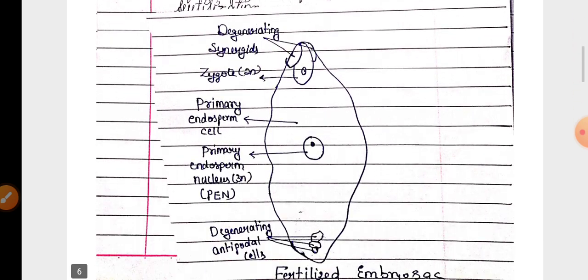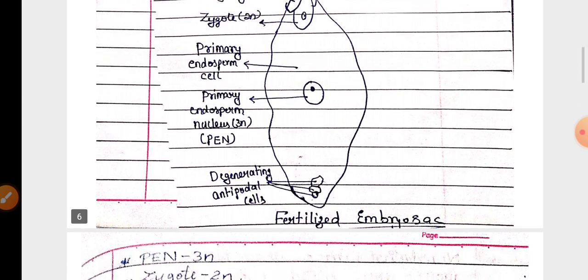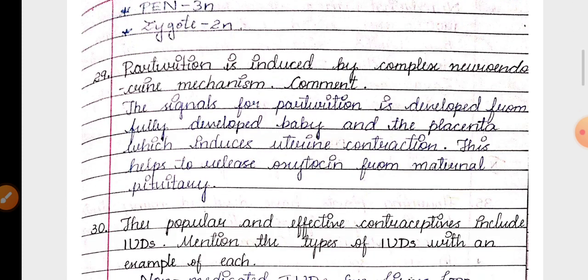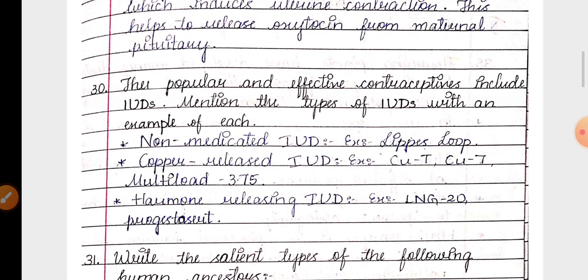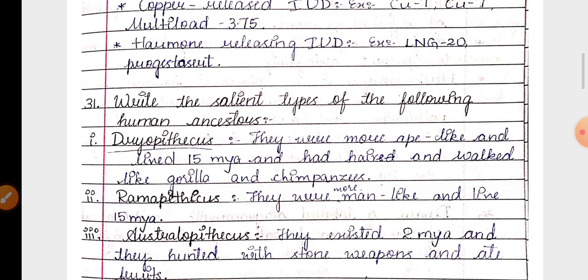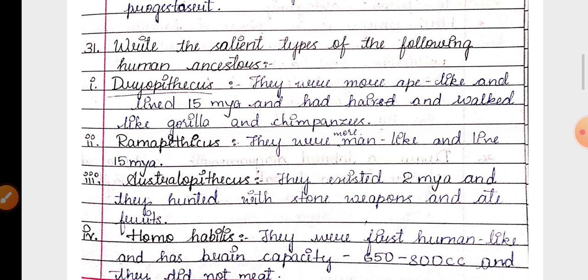In part C, 3 marks question, diagram of fertilized embryo sac. Then about parturition, PTL ejection reflex. Next 30th question related to three different types of IUDs.